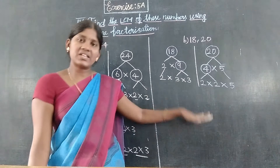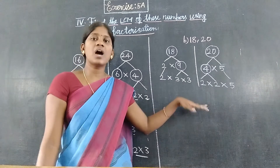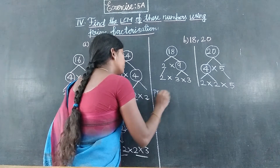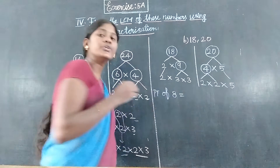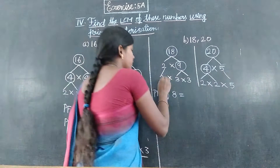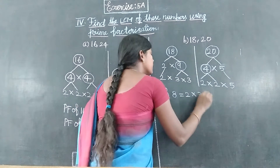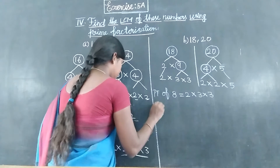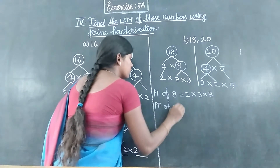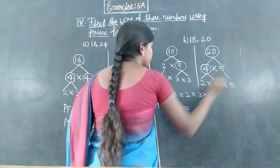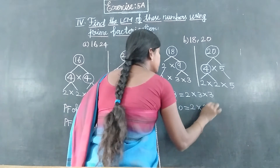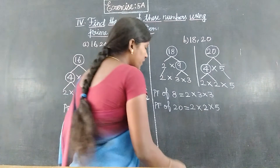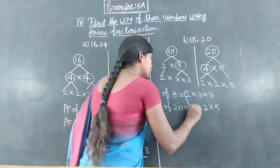So the prime factors of 18 equal 2 into 3 into 3, and the prime factors of 20 equal 2 into 2 into 5.